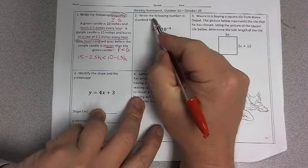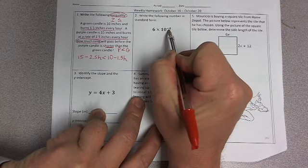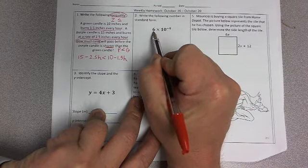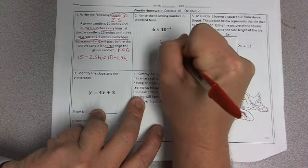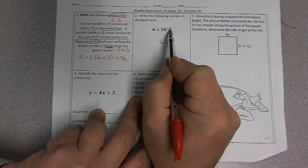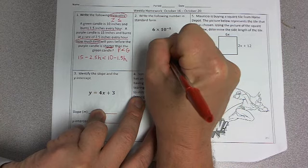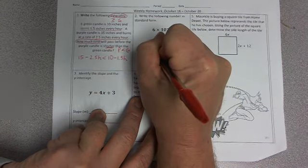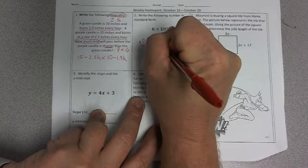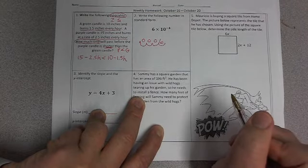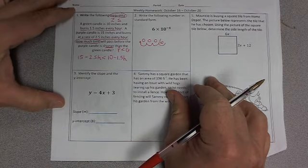Number 2. Write the following number in standard form. So first we see that we have a negative exponent, so that means we're going to make this number less than 1. The way that we do that is by moving our decimal by the number of places shown in the exponent. So we're going to move our decimal four places: 1, 2, 3, 4. So our decimal moves there, and just add zeros in the place values where there's currently no number. So the answer is 0.0006.